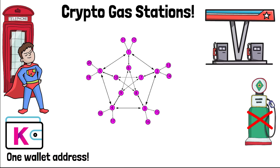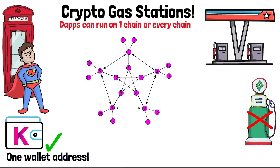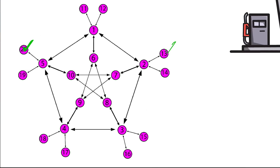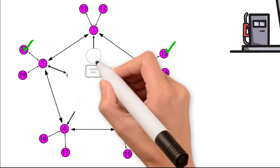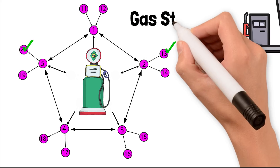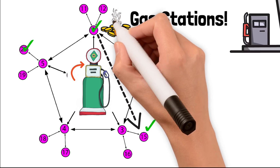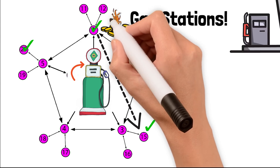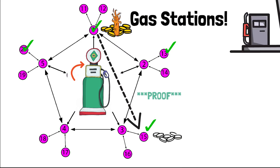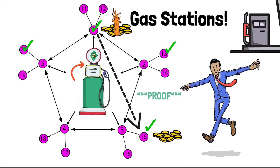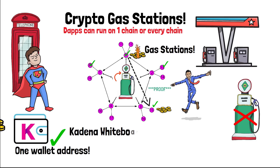To handle transfers across many chains, Kadena created what are called crypto gas stations — or as I like to think of them, teleportation stations. On Kadena, you only have one wallet address no matter what chain your coins are on. When you send coins from one chain to another, your coins get burned on the origin chain, the chain submits proof that those coins were burned to the next chain, and they are replicated on the destination chain.